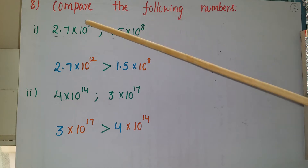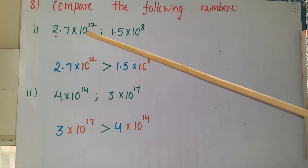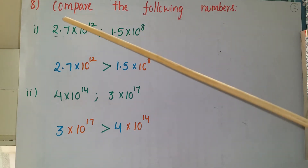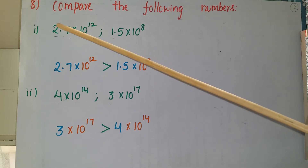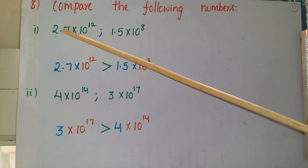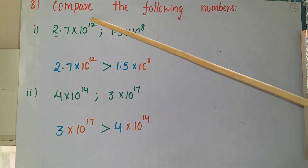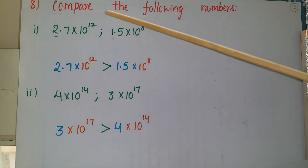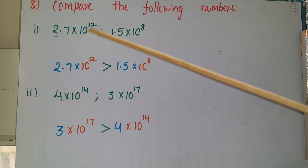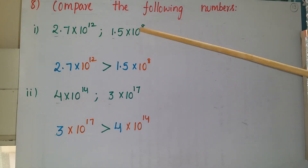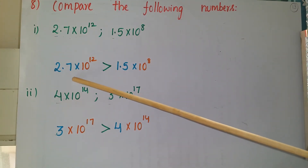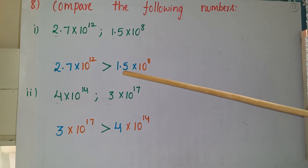Now compare the exponents: 10 to the power of 12 versus 10 to the power of 8. 10 to the power of 12 means 1 followed by 12 zeros; 10 to the power of 8 means 1 followed by 8 zeros. Since we are multiplying by 10 to the power of 12, that is a much bigger multiplier — 12 zeros versus 8 zeros. So 2.7 × 10¹² is greater than 1.5 × 10⁸.